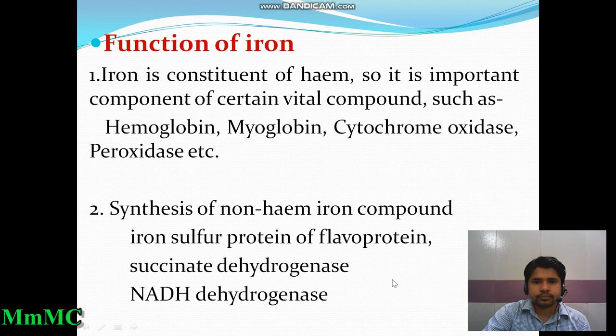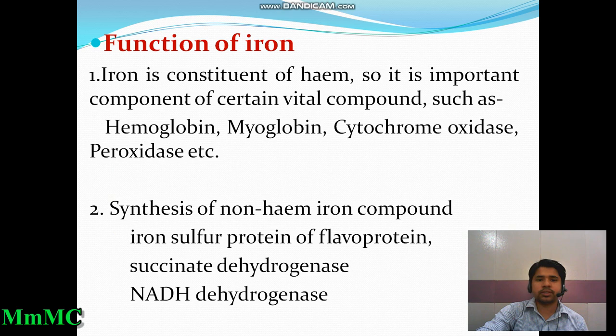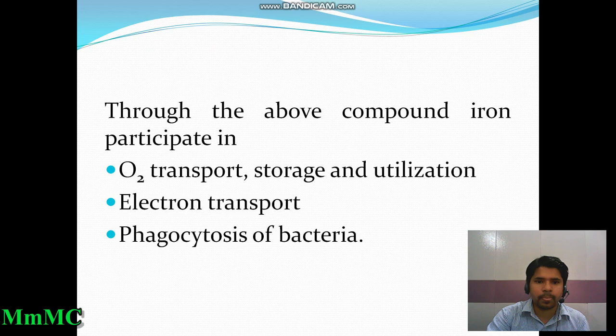In hemoglobin and myoglobin, iron is present for oxygen transport, storage, and utilization — not only oxygen but also carbon dioxide and electron transport. Iron is also involved in phagocytosis of bacteria; in white blood cells (leukocytes), peroxidase enzyme requires iron to form free radicals and kill bacteria. So iron is passively needed for our immune system.